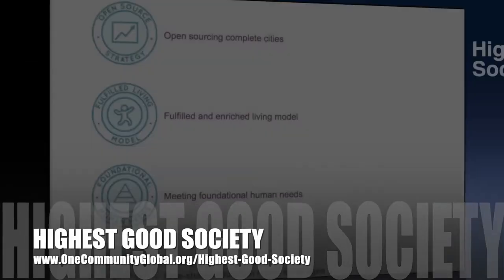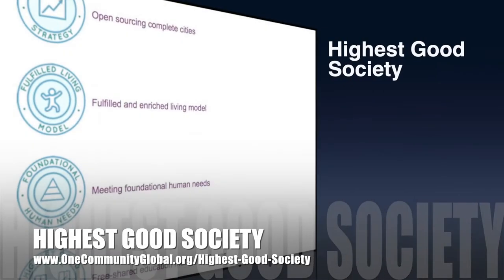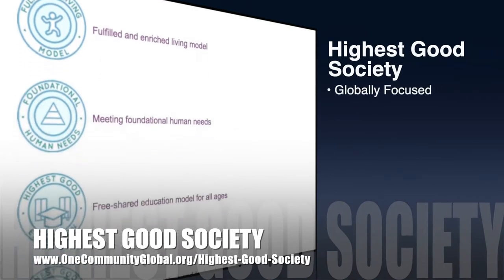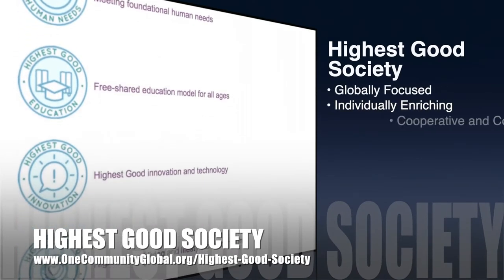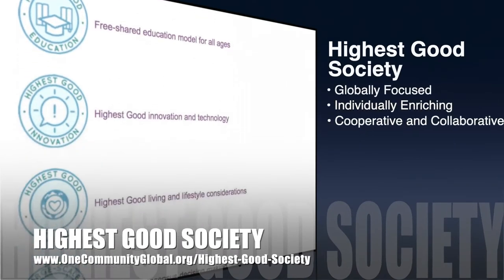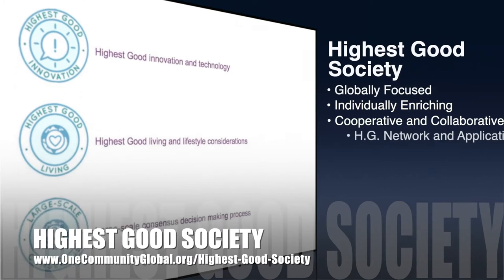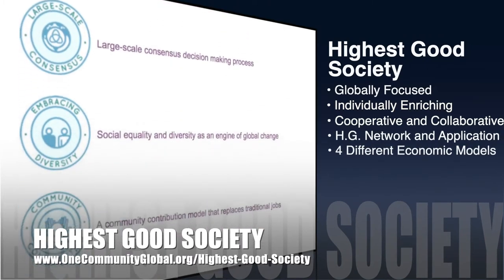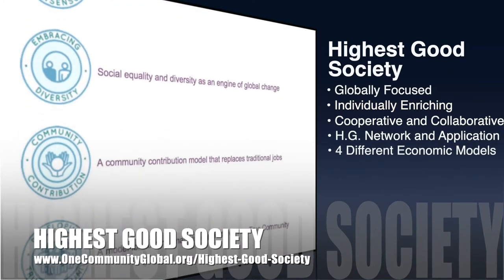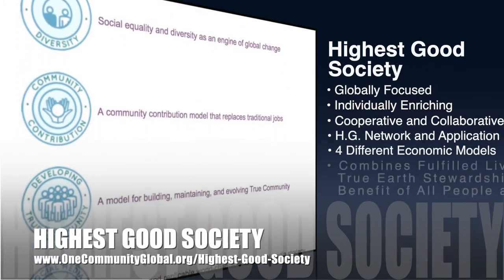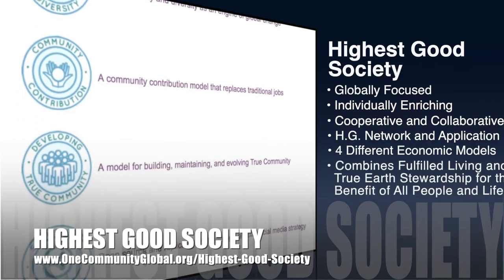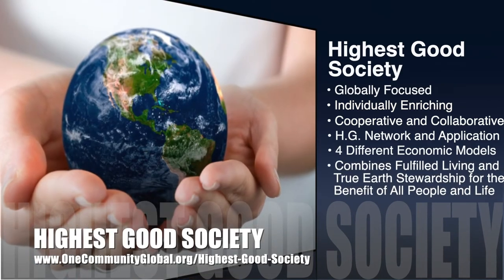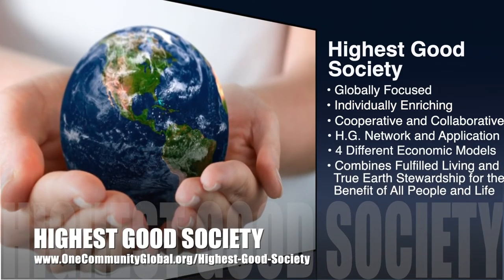The One Community approach to highest good society is globally focused, individually enriching, cooperative and collaborative. It includes a highest good network and application, four different economic models, and combines fulfilled living and true earth stewardship for the benefit of all people and all life on this planet.